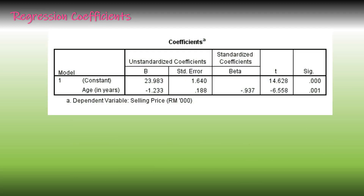This is the regression coefficient output. From this output, you can identify the value of A and the value of B. Recall that A is the Y-intercept or constant, and B is the slope. When you have the values of A and B, you can form the regression equation or regression model, which is Y = A + BX.